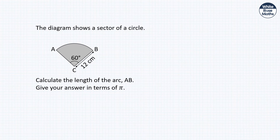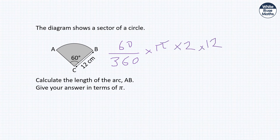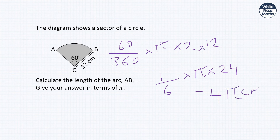Calculate the arc length AB for a sector with angle 60° and radius 12 cm, giving the answer in terms of π. Arc length = (60 ÷ 360) × 2π × 12 = (1/6) × 24π = 4π centimetres.